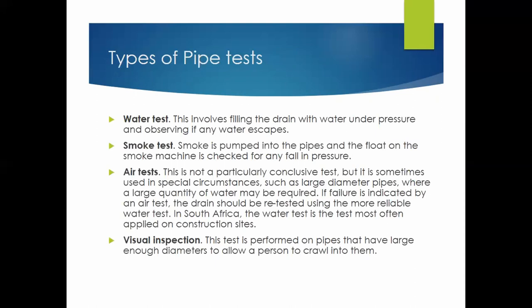There are several tests you should perform on pipes to check for leaks, correct flow, and correct gradient: the water test, the smoke test, the air test, and a visual inspection. If you get your first job as a site agent, this is the type of work you'd likely be doing, so it's worth reading up on these four tests.